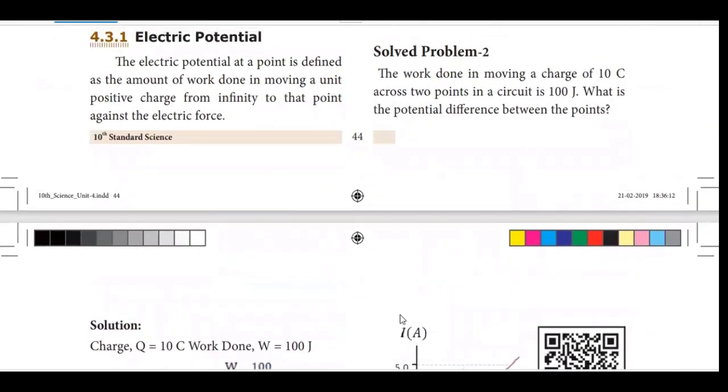The work done in moving a charge of 10 coulomb across 2 points in a circuit is 100 joule. What is the potential difference between the points? Now, work done. Here, we have a simple mnemonic in previous videos. W is equal to VQ. W is work. We spend very quick.